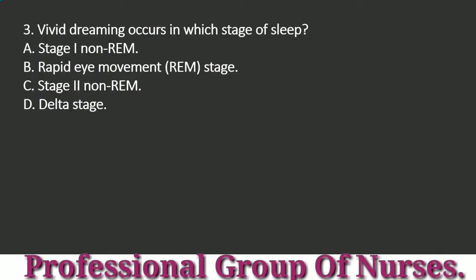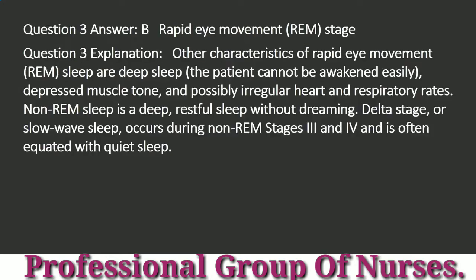Question 3: Vivid dreaming occurs in which stage of sleep? a. Stage I non-REM. b. Rapid eye movement (REM) stage. c. Stage 2 non-REM. d. Delta stage. Answer: b. Rapid eye movement (REM) stage. Explanation: Other characteristics of REM sleep are deep sleep, the patient cannot be awakened easily, depressed muscle tone, and possibly irregular heart and respiratory rates. Non-REM sleep is a deep, restful sleep without dreaming. Delta stage, or slow-wave sleep, occurs during non-REM stages 3 and 4 and is often equated with quiet sleep.